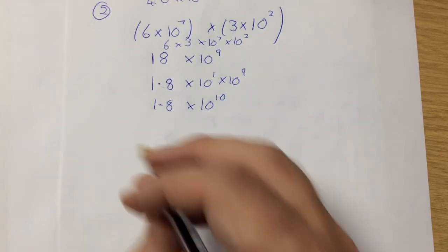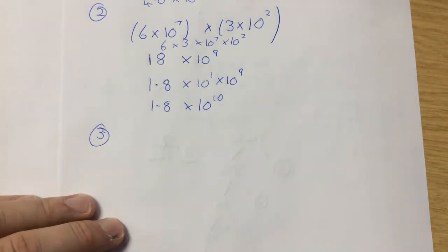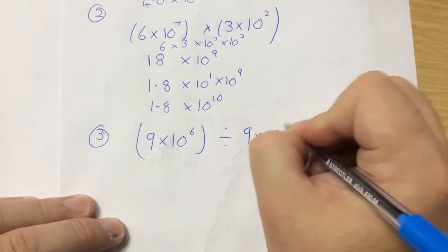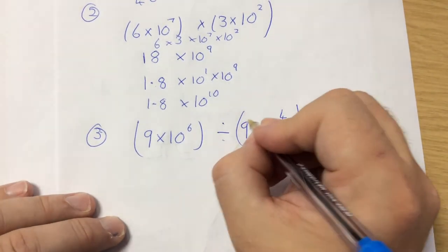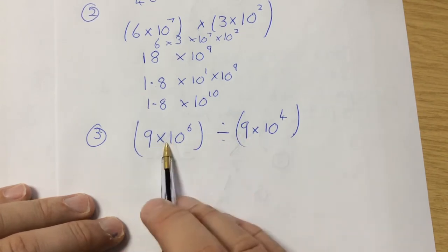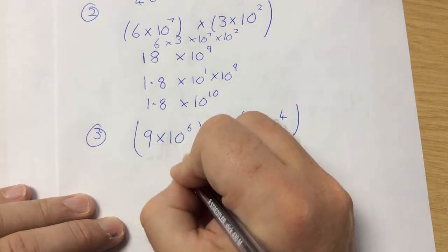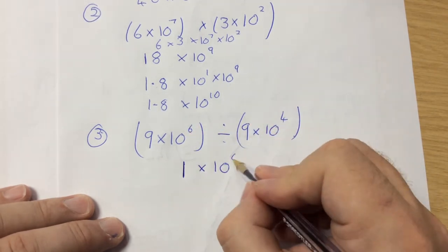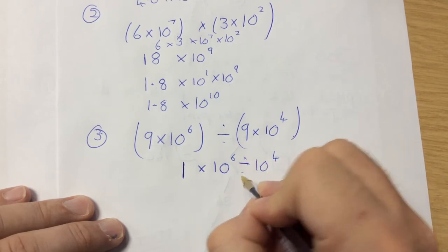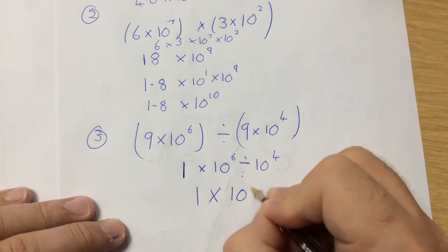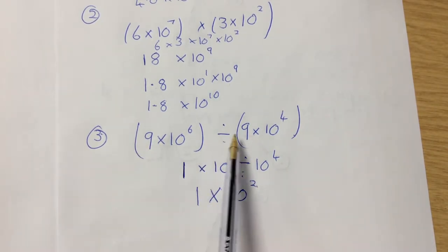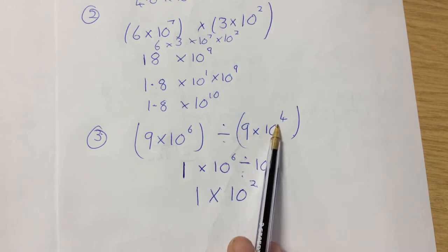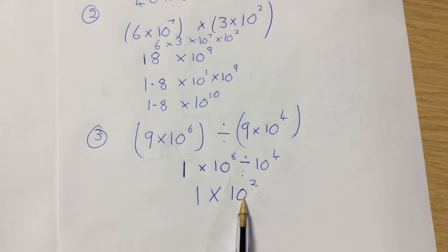That's when you're multiplying. Let's go through one where you divide. So if I've got 9 times 10 to the 6 divided by 9 times 10 to the 4 — 9 divided by 9 is 1, so that becomes 1. And then 10 to the 6 divided by 10 to the 4: when you divide indices, you take them away, so 6 minus 4 gives 10 squared. That becomes 1 times 10 to the 2.